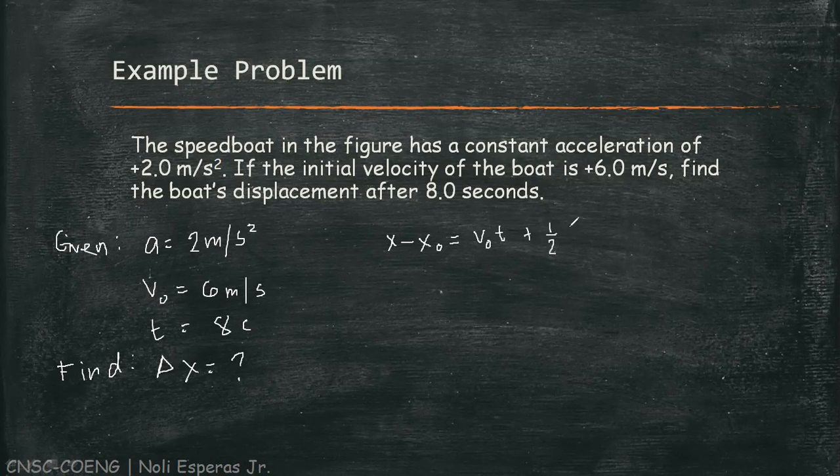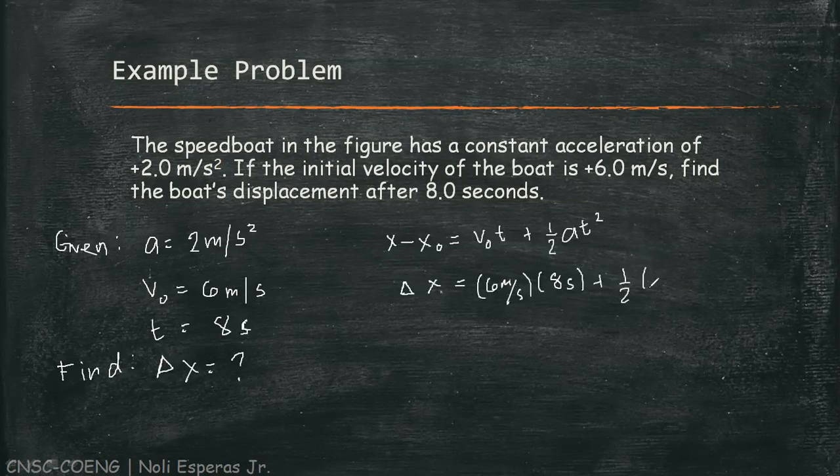½at², where x - x₀ is the displacement. Let's substitute the values. We have 6 m/s times 8 seconds plus ½ times 2 m/s² times